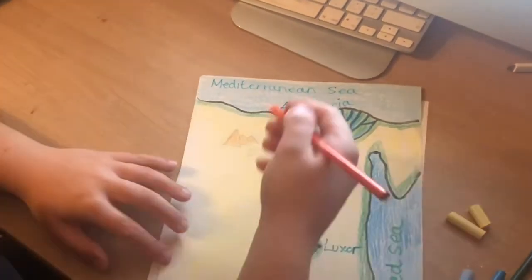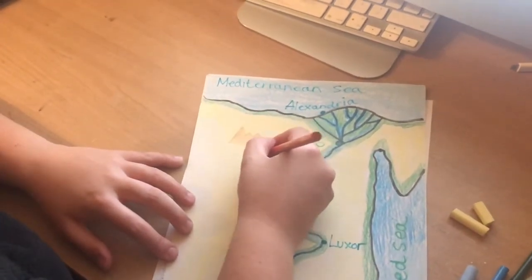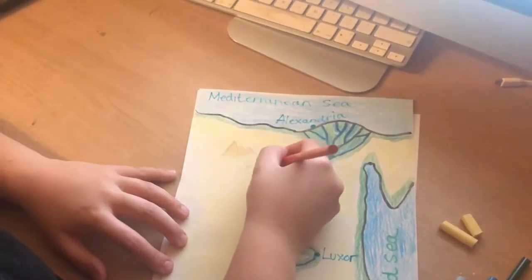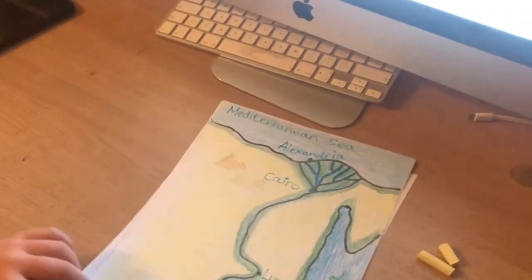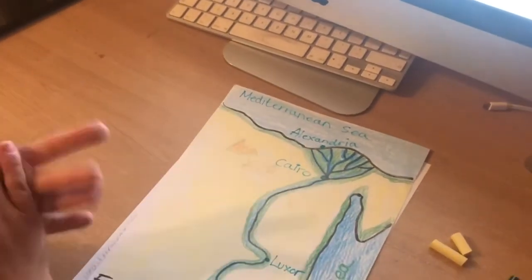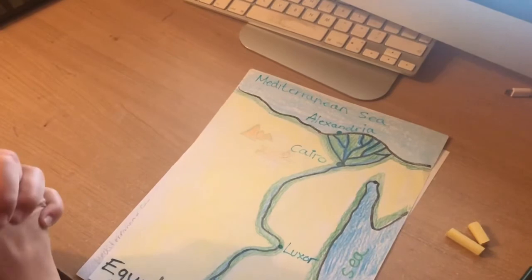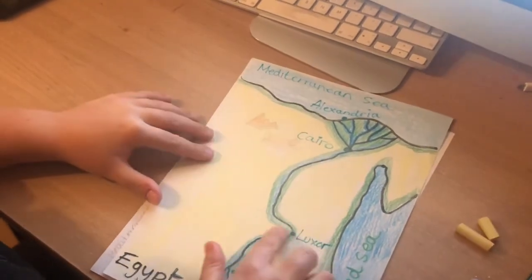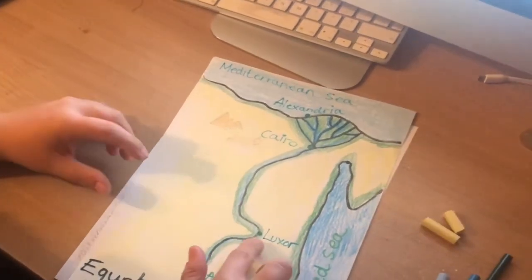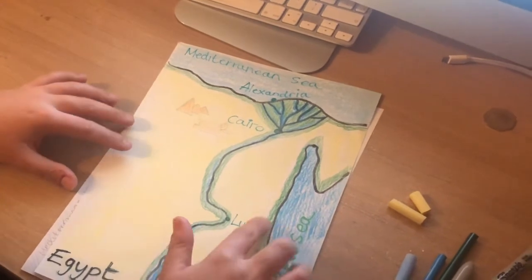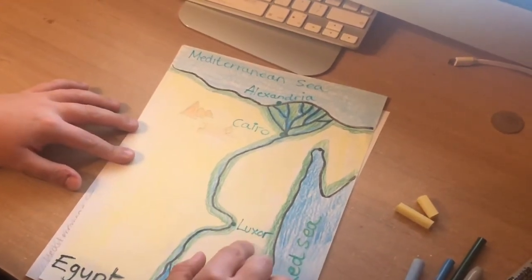I'm going to add a little bit of colouring to that. And then anything else, perhaps some other symbols that we've learned about Egypt, you could have those drawn in there. Perhaps down by Luxor where the Valley of the Kings is, you might be able to draw the mask of Tutankhamun to represent that.